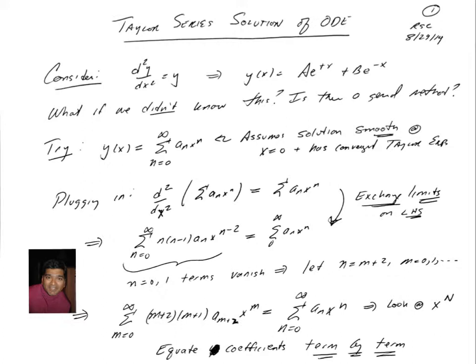We already know how to solve a problem like this, a second order linear differential equation with constant coefficients. And if you look at the characteristic equation you'll easily see the solution is of the form some constant times e to the plus x plus another constant times e to the minus x.